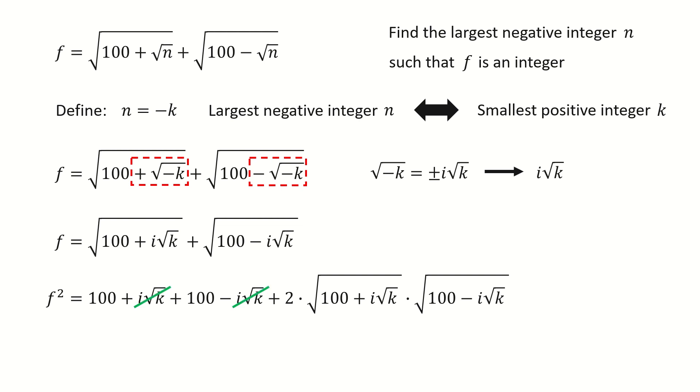These two terms cancel out. After simplifying, we got here. This product goes to here by using the property i² equals minus 1.